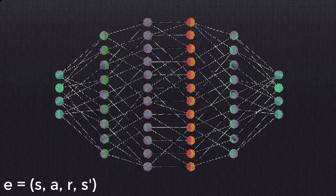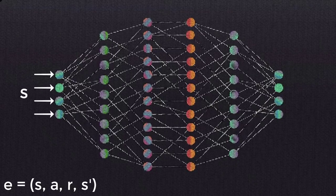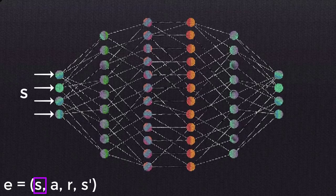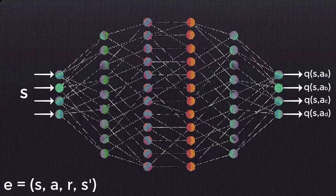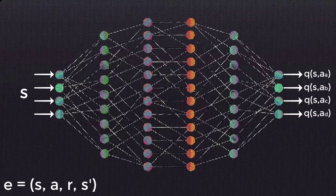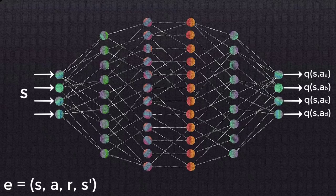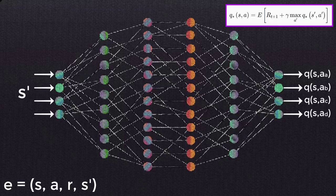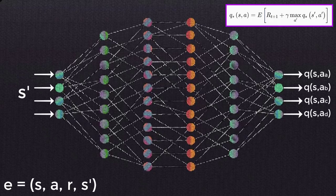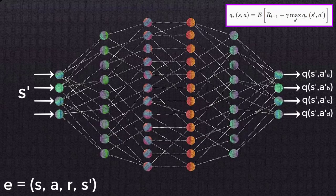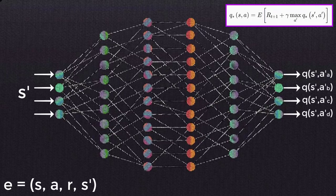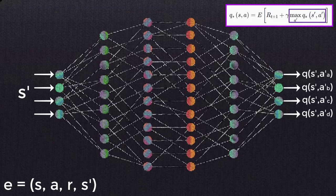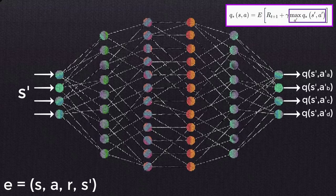As a quick refresher, remember for a single sample, the first pass to the network occurs for the state from the experience tuple that was sampled. The network then outputs the queue values associated with each possible action that can be taken from that state, and then the loss is calculated between the queue value for the action from the experience tuple and the target queue value for this action. To calculate the target queue value though, we were required to do a second pass to the network with the next state. From this second pass, we can obtain the maximum queue value among the possible actions that can be taken from that next state, and then plug this value into the Bellman equation to calculate the target queue value for the action from the first pass.